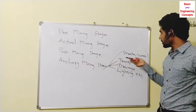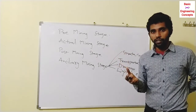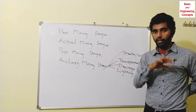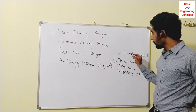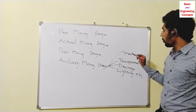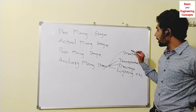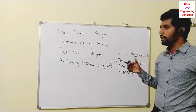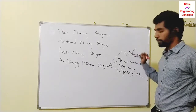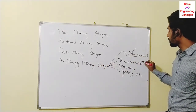One hurdle is strata control. Strata control means managing the surrounding rock during mineral extraction. The overburden — material with no mineral deposit, similar to gang — must be controlled. The strata control process involves managing the overburden during mineral extraction.